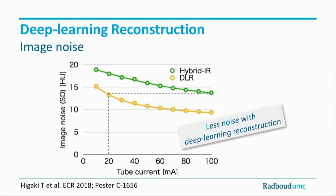Measurements from a Japanese group show that the image noise with deep learning reconstruction is the same as with hybrid reconstruction at five times more dose — 100 mA tube current produces the same noise as 20 mA with deep learning reconstruction. Does that mean we can reduce image dose by a factor of five? Unfortunately no, because although measured noise as standard deviation is the same, the noise texture changes and becomes much rougher. However, we can still reduce the dose by roughly 30% and get a better, finer noise texture at that lower dose.